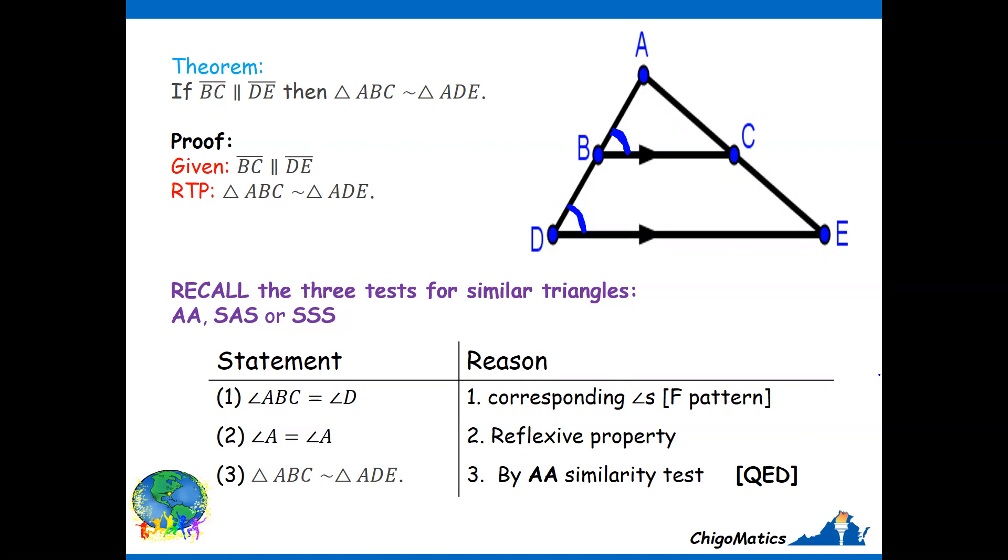Then we find another angle, and the angle that comes to mind is angle A, which is common. It was not only A—you could have checked the one in green, this one is also equal to that. You could have taken those as your second angle, but I chose A which is common.